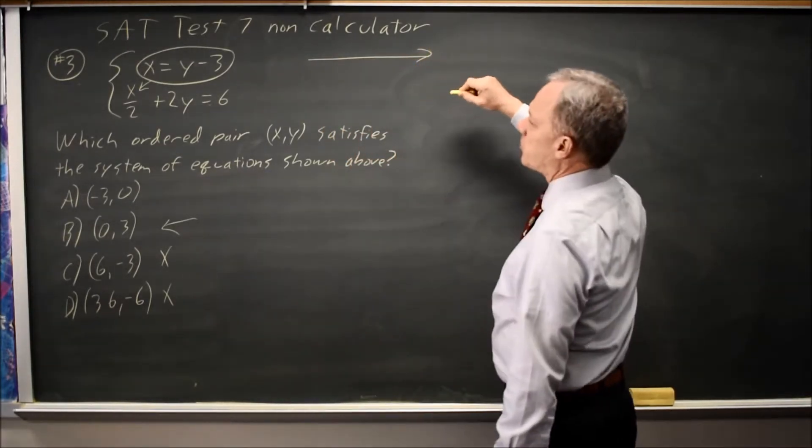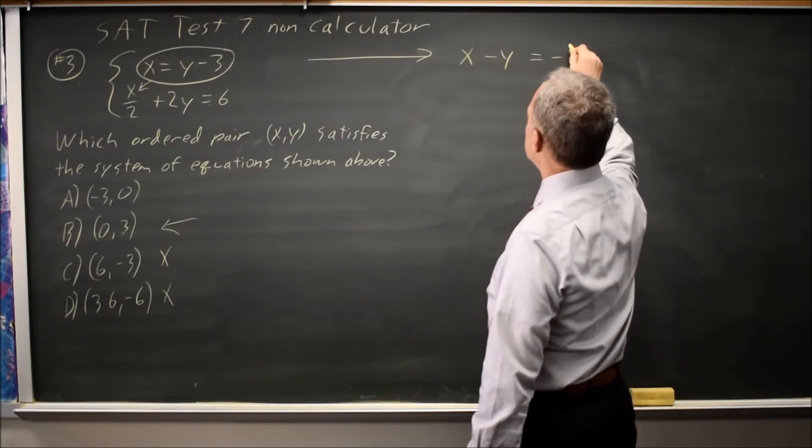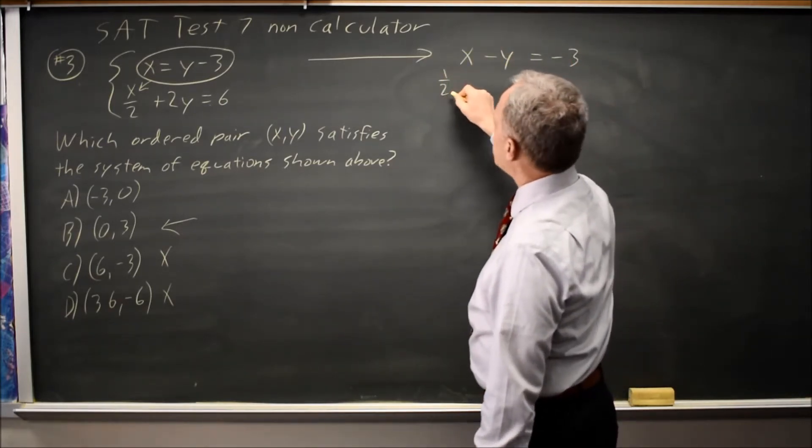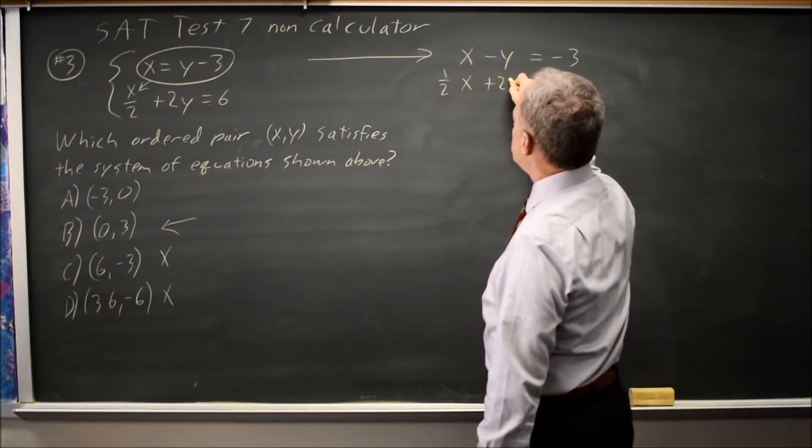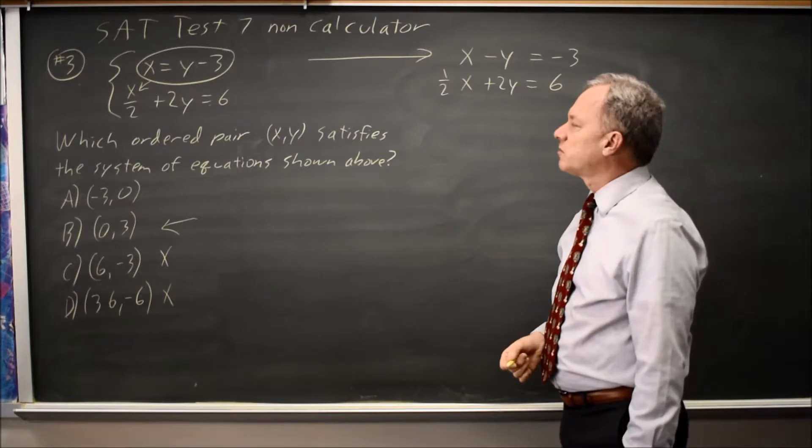So let's take that first equation and move the y to the left-hand side. That's x minus y equals negative 3. And the second equation is one-half x plus 2y equals 6. I just prefer having a coefficient rather than a denominator.